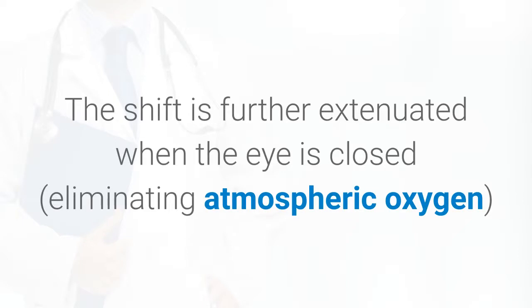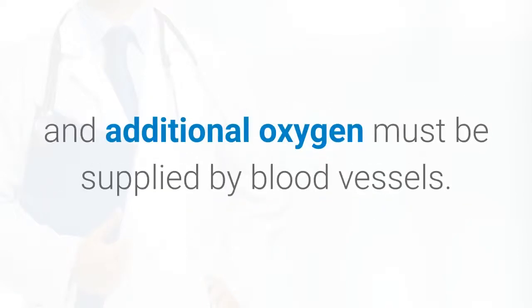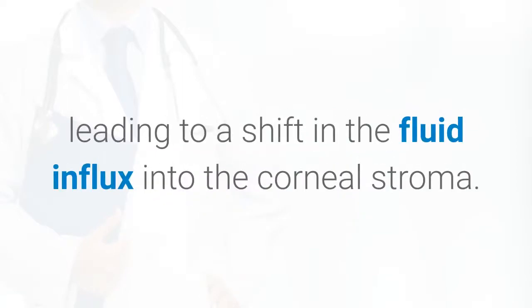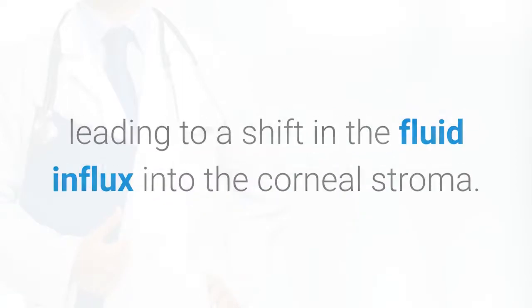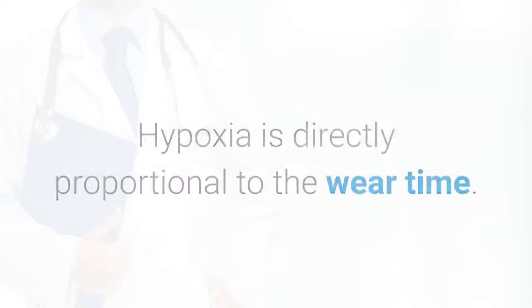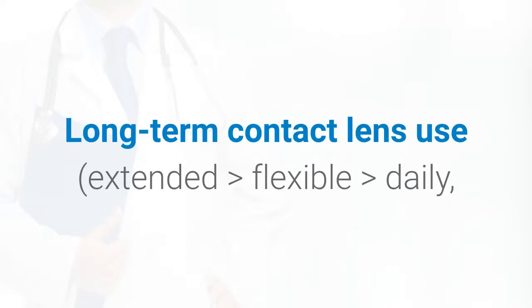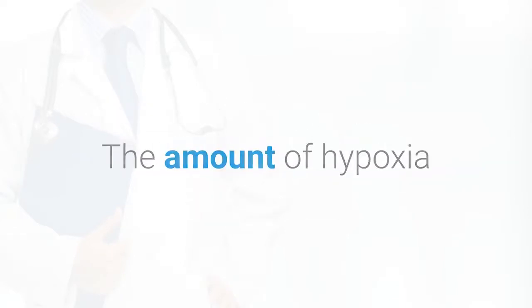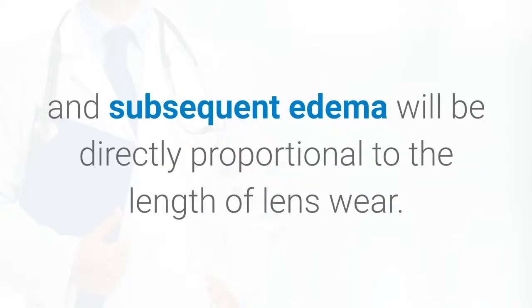The shift is further exacerbated when the eye is closed, eliminating atmospheric oxygen, and additional oxygen must be supplied by blood vessels. This creates a lower oxygen tension, leading to a shift in fluid influx into the corneal stroma. Hypoxia is directly proportional to wear time: long-term contact lens use extended greater than flexible greater than daily, and soft greater than rigid, will have various hypoxic effects on the cornea. The amount of hypoxia and subsequent edema will be directly proportional to the length of lens wear.